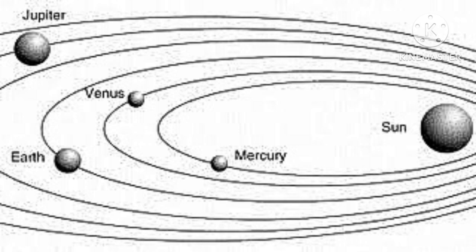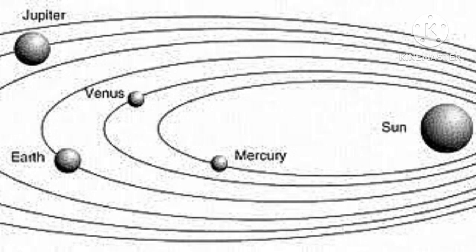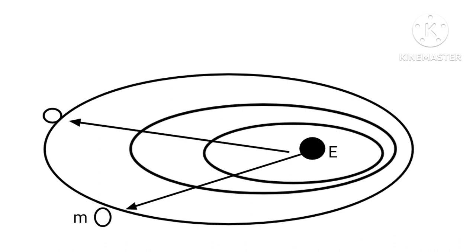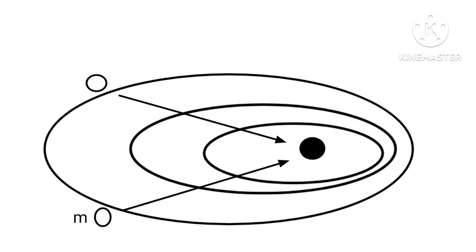In our last episode we went through Kepler's laws. Now comes Newton, who was inspired by observing an apple falling from a tree. Inspired by this, Newton gave an explanation of terrestrial gravitation as well as Kepler's laws. He stated that the moon revolves in an orbit around the earth due to a centripetal force supplied by the earth.